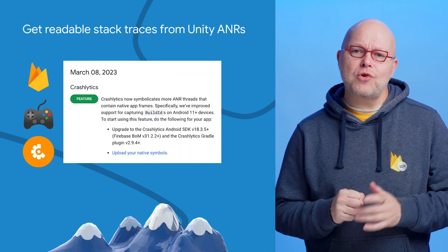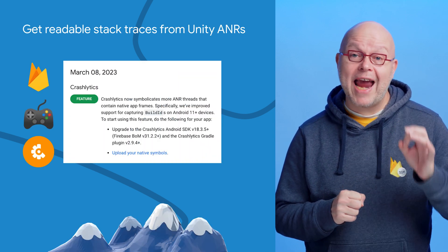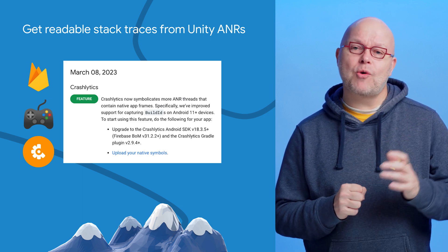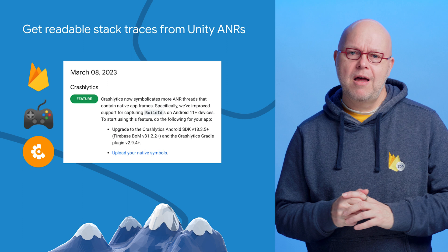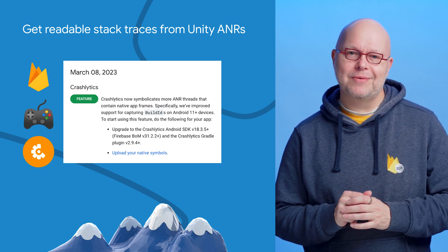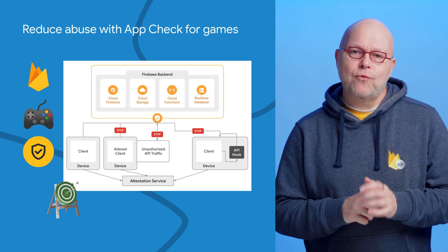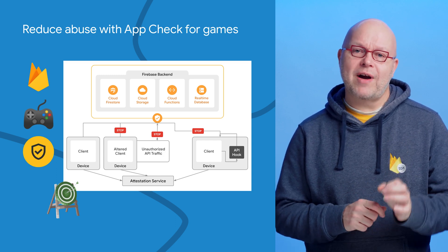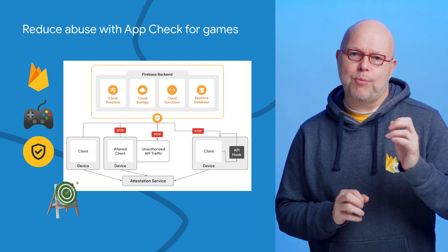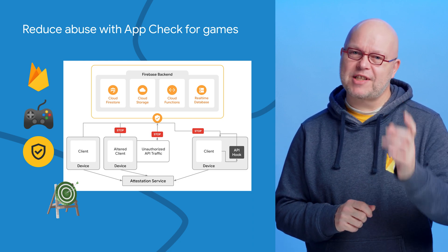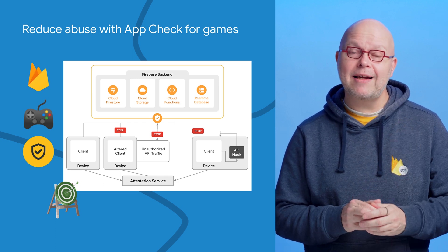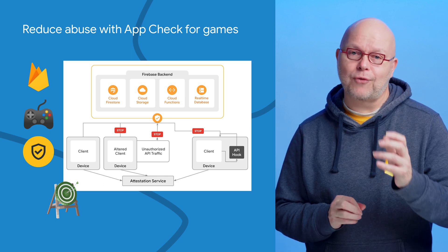Crashlytics now also supports the simplification of Application Not Responding, or ANR, events in apps that use the Android NDK, including Unity games compiled with IL to CPP. Our backend then processes them into more readable stack traces in the Crashlytics console. AppCheck reduces abuse by blocking requests to your Firebase project that come from a tampered version of your game or from an illegitimate device. Support for AppCheck is coming to the Firebase SDKs for C++ and Unity soon, so that you can use it to reduce the risk of leaderboard hacking, illegitimate item unlocks, and other forms of cheating.